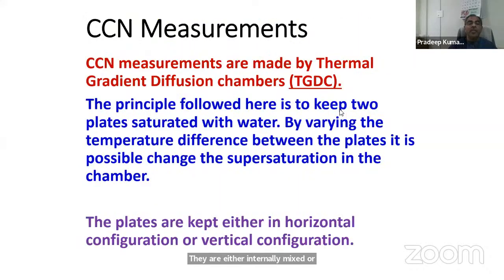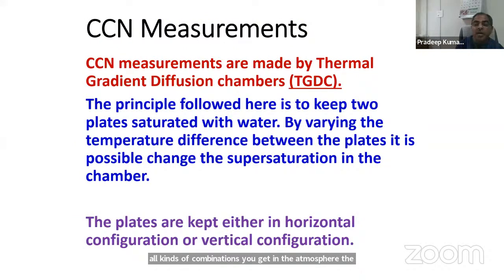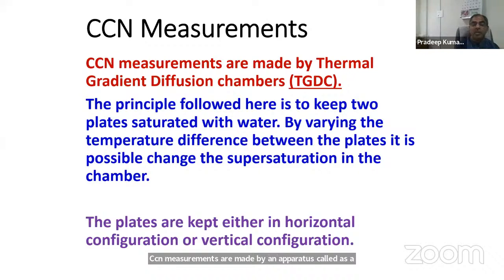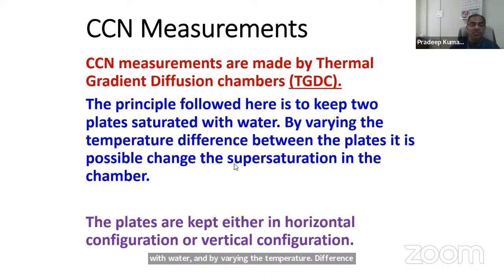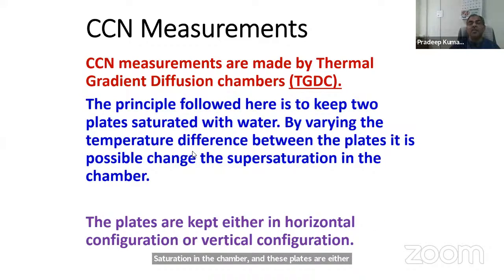CCN measurements are made by an apparatus called a thermal gradient diffusion chamber. The principle is to keep two plates saturated with water, and by varying the temperature difference between the two plates it is possible to change the supersaturation in the chamber. These plates are kept either in a horizontal configuration or in a vertical configuration.